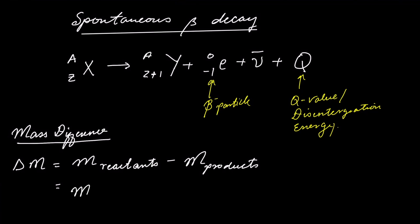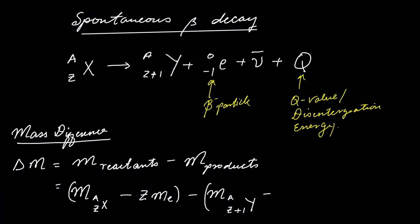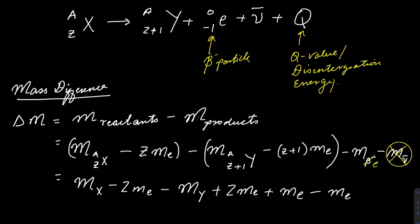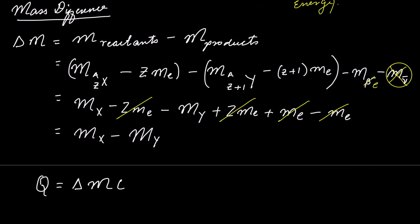We take the atomic mass of element X minus the number of electrons times the mass of electrons. We cannot ignore electrons because we are emitting an electron — the beta minus particle. Then we subtract the atomic mass of the daughter nucleus minus its electrons, minus the mass of the beta minus electron, minus the mass of the anti-electron neutrino. We can ignore the anti-electron neutrino, and by rearranging this formula we see that the mass difference equals the difference in atomic masses of the parent and daughter nucleus. We then multiply the mass difference by c squared to get the Q value of beta minus decay.